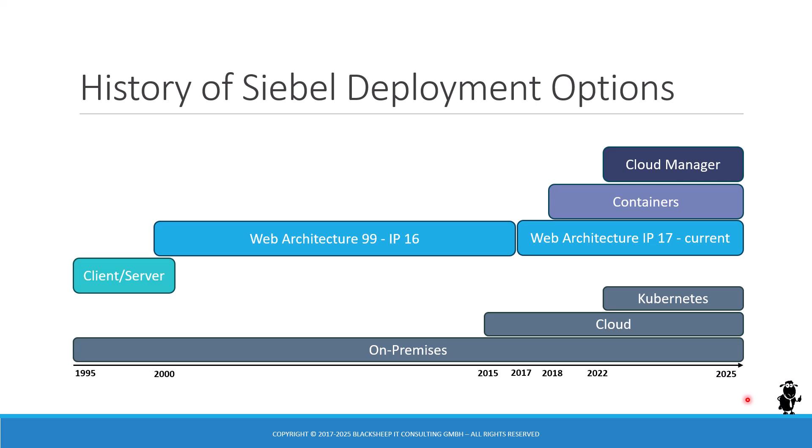In this Siebel anniversary presentation, a timeline fits well. So I created a little timeline drawing on the history of Siebel deployment options. Let's wind back to 1995 where the first version of Siebel was in the client-server architecture — there was basically no web client, no web server involved. You had a dedicated client connecting to a database server, with a Siebel server acting more or less in the background doing EIM jobs, for example, and later starting to serve applications.